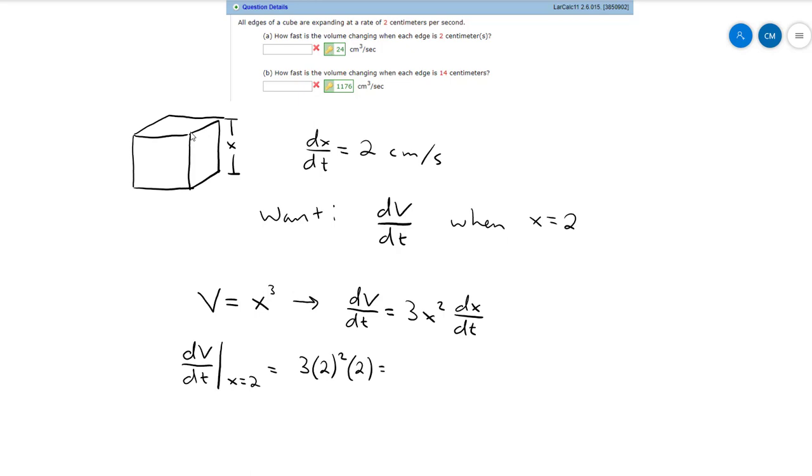And so that gives us 4 times 2 is 8 times 3 is 24 cubic centimeters per second would be the units on that. So that's part a